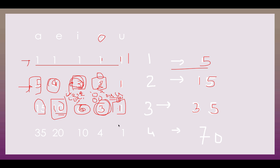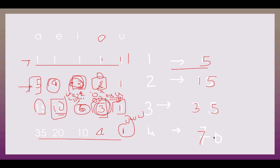For n equals 4: the 'u' position is always 1. At the 'o' position, we get 1+1+1+1=4. Then 6+4=10, then 10+10=20, then 15+20=35. So the total for n equals 4 is 1+4+10+20+35 = 70.